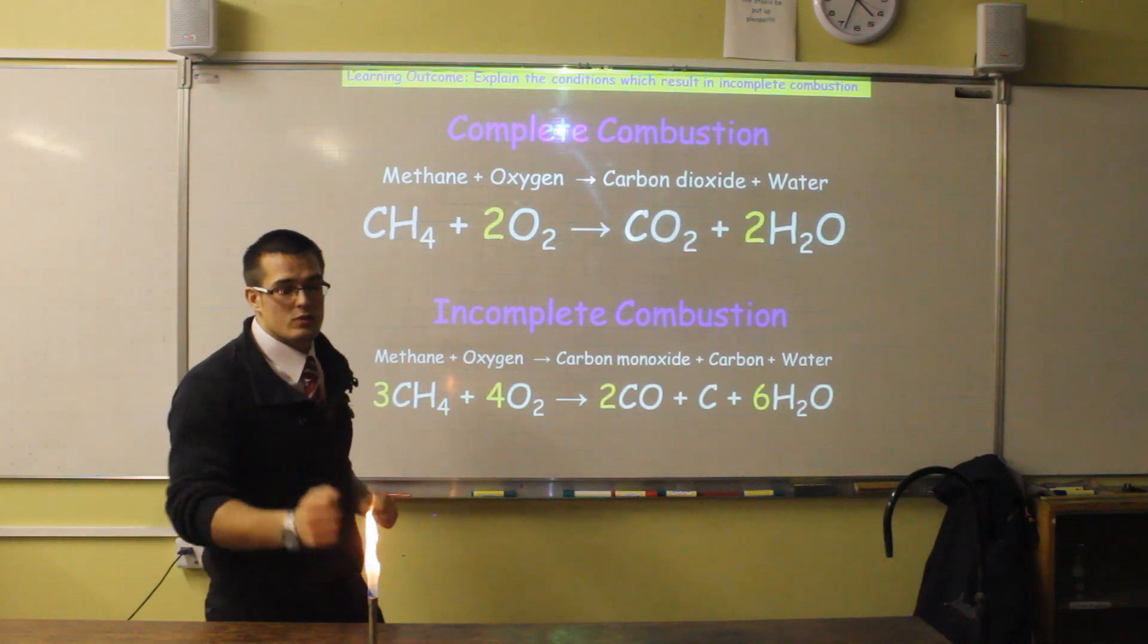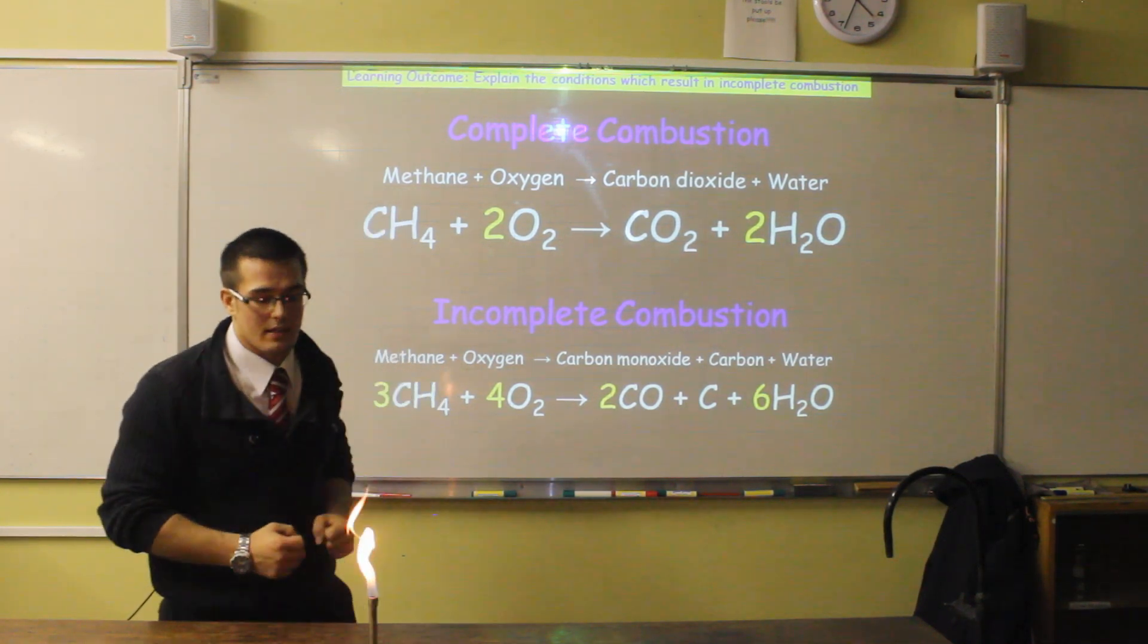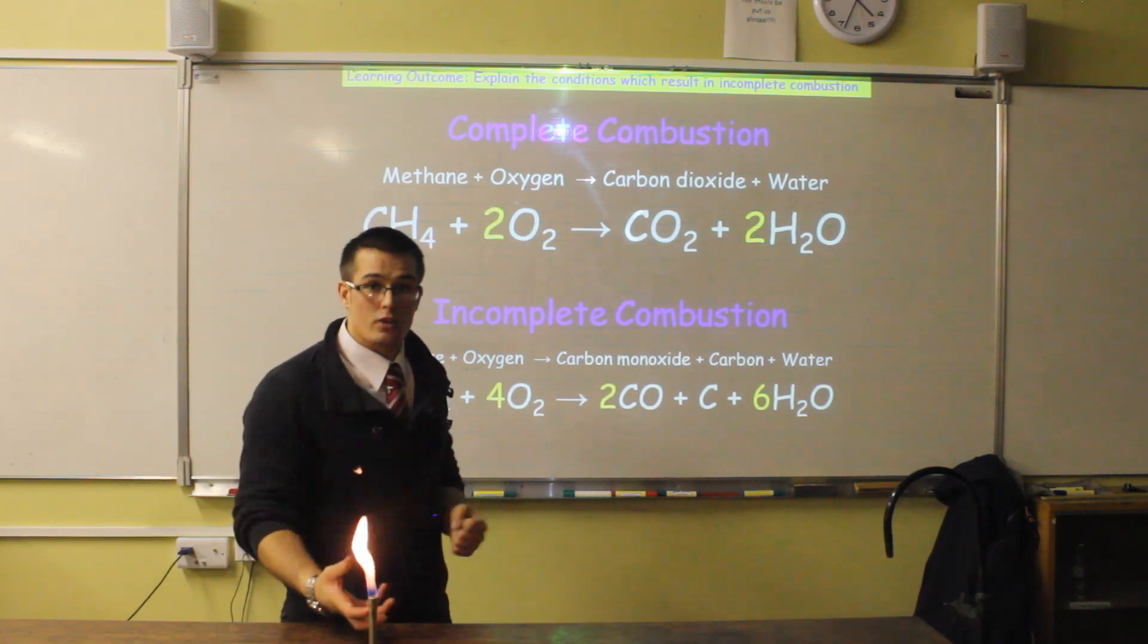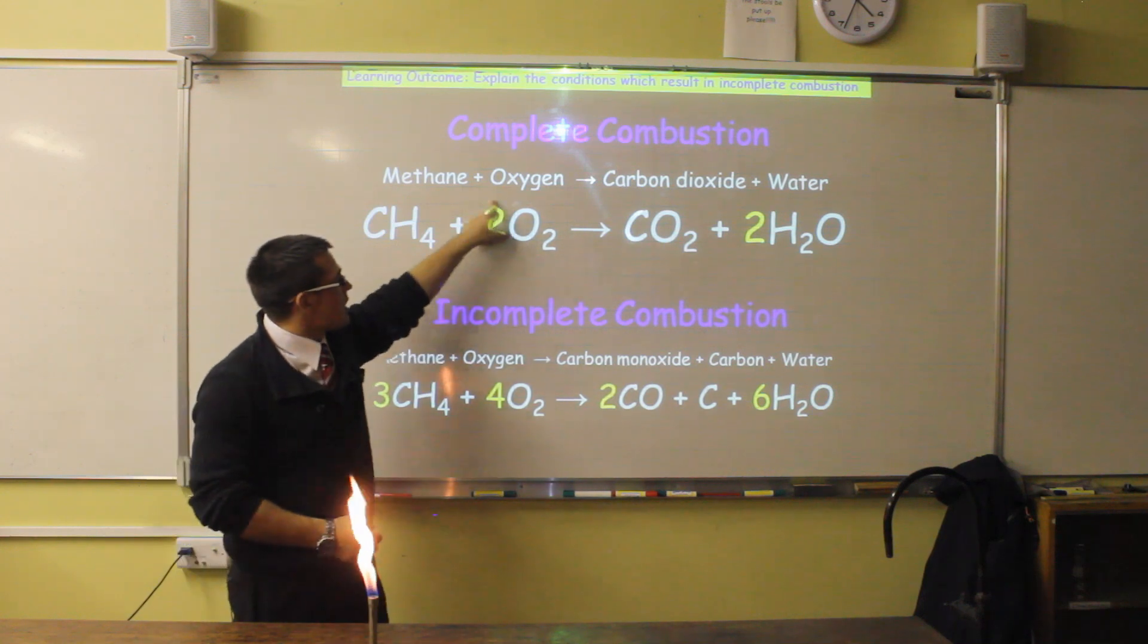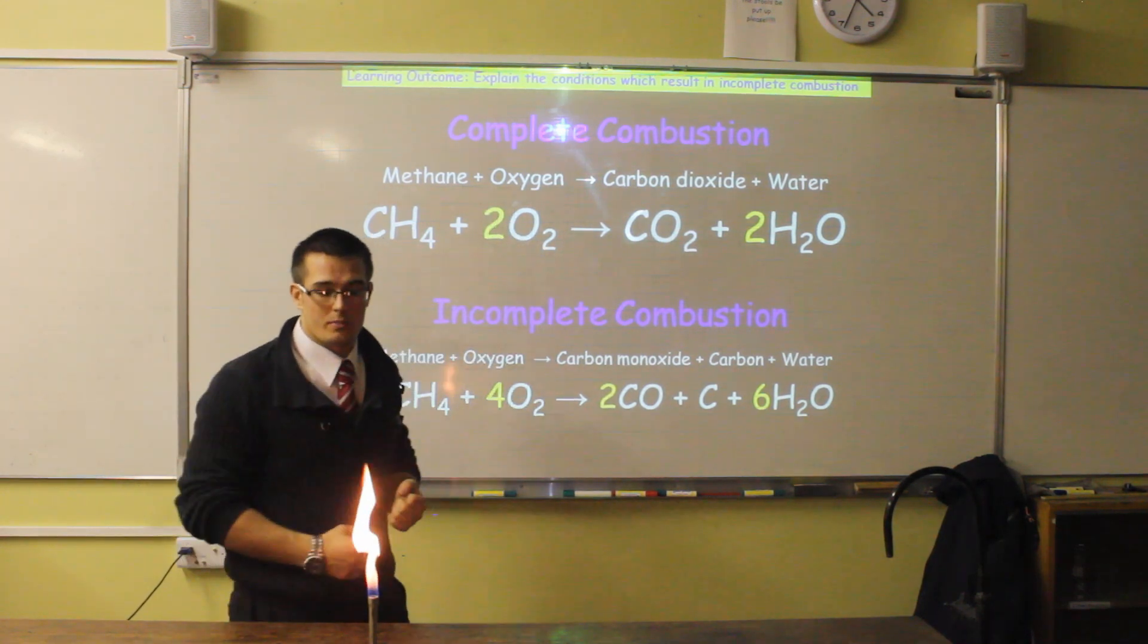At this state, this is what we call the safety flame, the yellow flame. This is what we have on where we're not heating anything. And if you look at the hole over the Bunsen burner, you'll see that it's closed. This is because we're not allowing an excess of oxygen to mix with the methane before it burns.